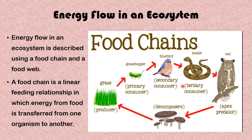Tertiary consumers, such as the snake, feed on secondary consumers. We also have quaternary consumers — the owl in this case is a quaternary consumer because it feeds on tertiary consumers. The food chain is incomplete without the decomposers, because decomposers break down dead organic matter. If the owl, snake, or bluebird dies, the decomposers break down their bodies and make the nutrients available in the soil. The plants then use these nutrients to grow, causing the cycle of the food chain to continue.